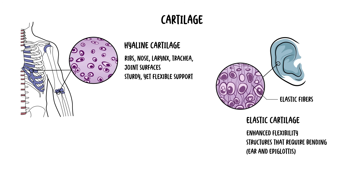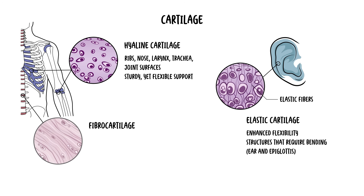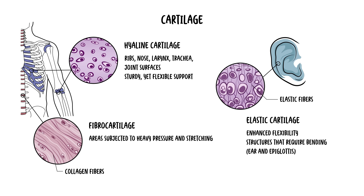Then you have fibrocartilage, the toughest type. It contains thick bundles of collagen fibers and is found in areas subjected to heavy pressure and stretch, such as the intervertebral discs, the meniscus of the knee, and the pubic symphysis.